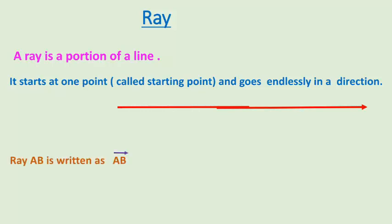If we have a portion of a line drawn and marked as AB, then we can represent that ray as ray AB.